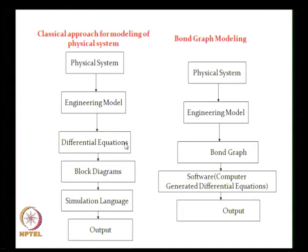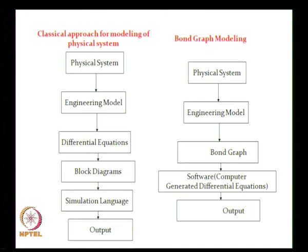The main difference between the classical approach and bond graph modeling is: in the classical approach, we start with the physical system, create an engineering model, write down differential equations, then use block diagrams and simulation language to simulate and get the output. In bond graph modeling, we skip some of these stages — we convert the physical system to an engineering model, then directly create a bond graph without writing differential equations or block diagrams. The bond graph is used in computer software which automatically generates the differential equations and simulates the system. The only requirement is knowing how to create the bond graph from the engineering model — no direct equations, only graphical representation.